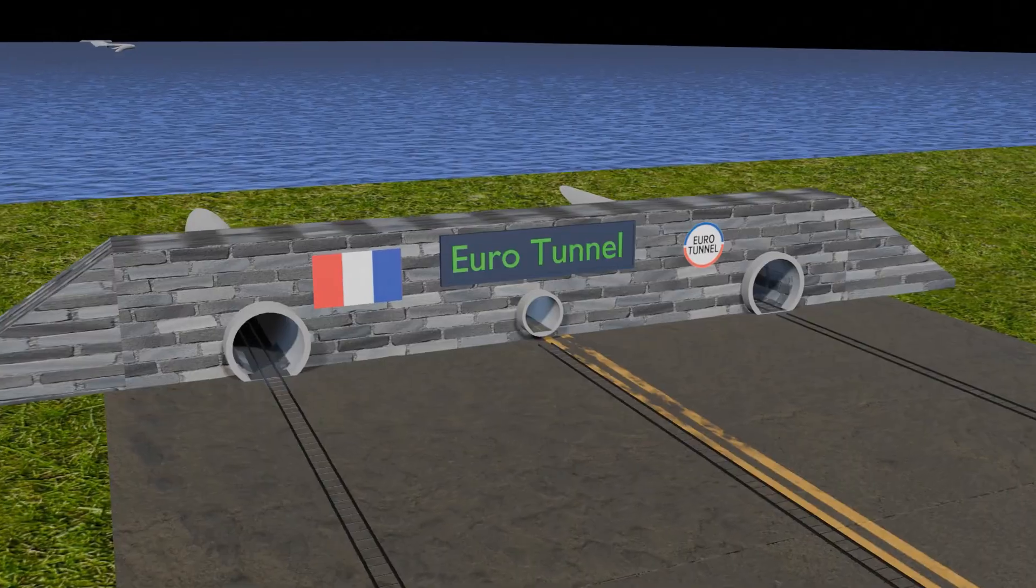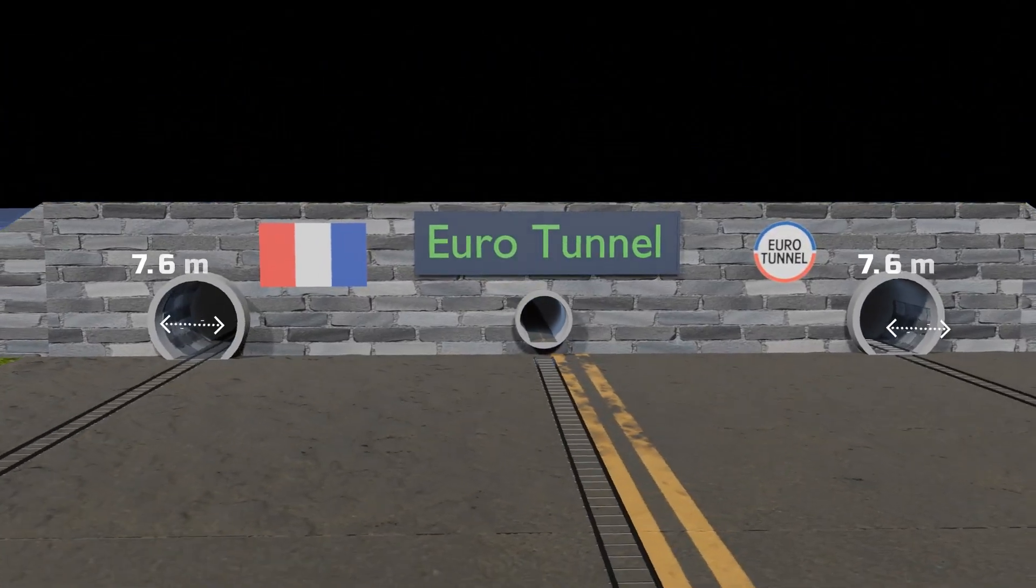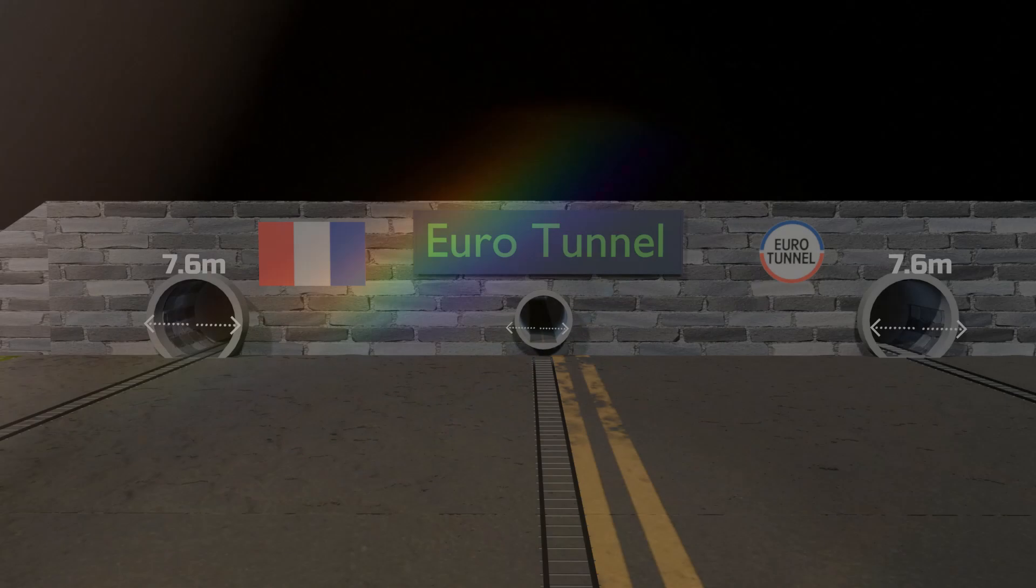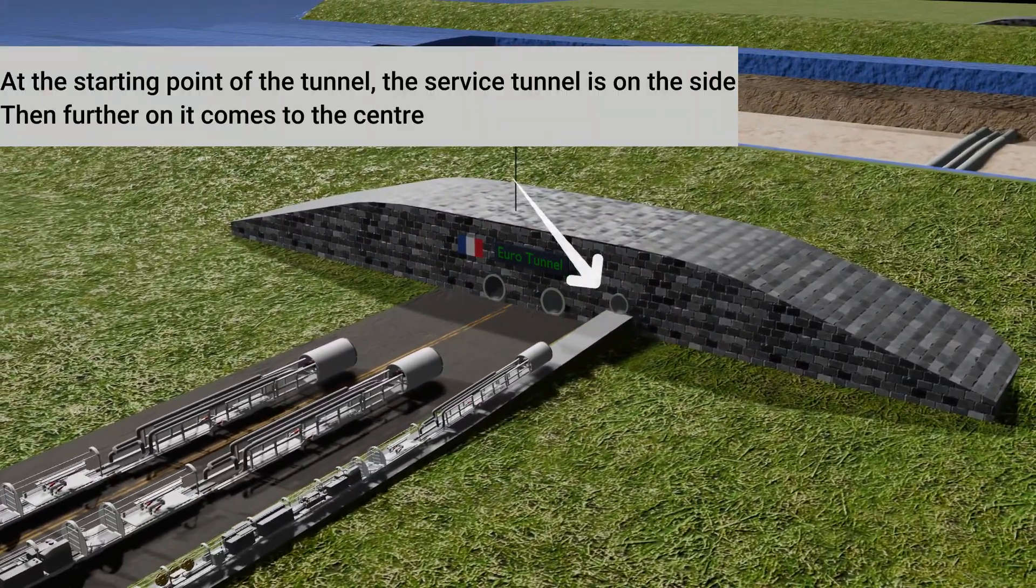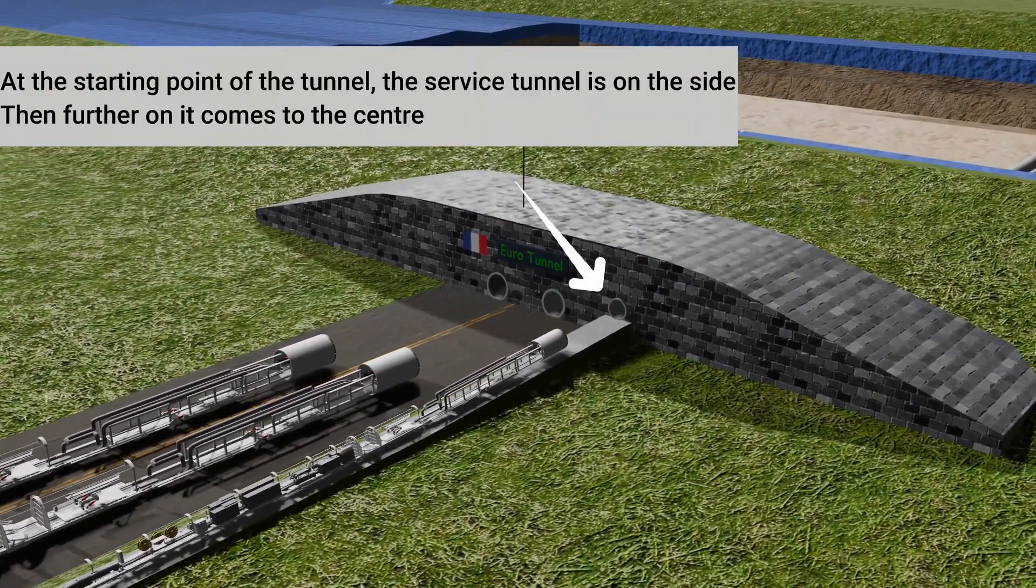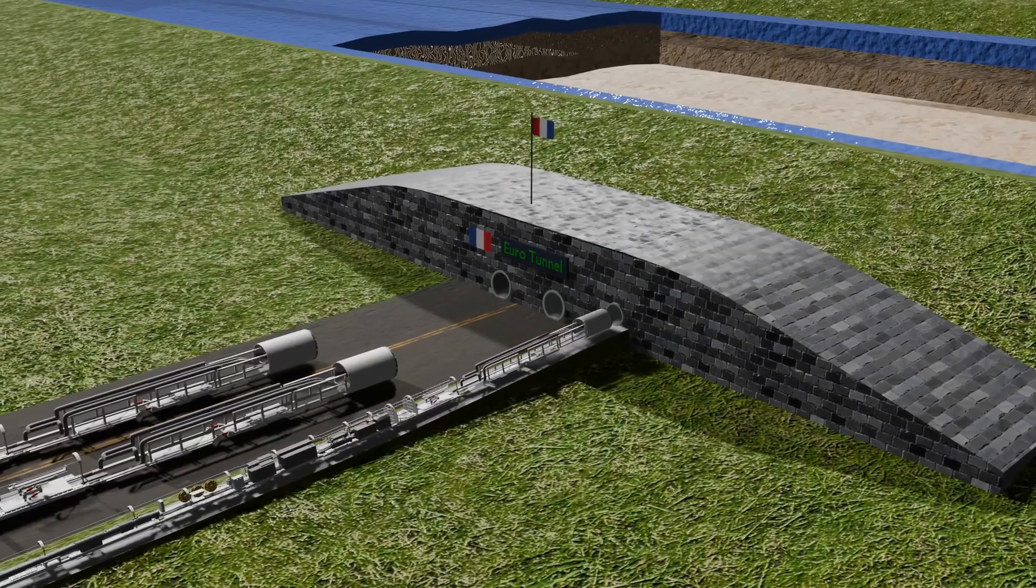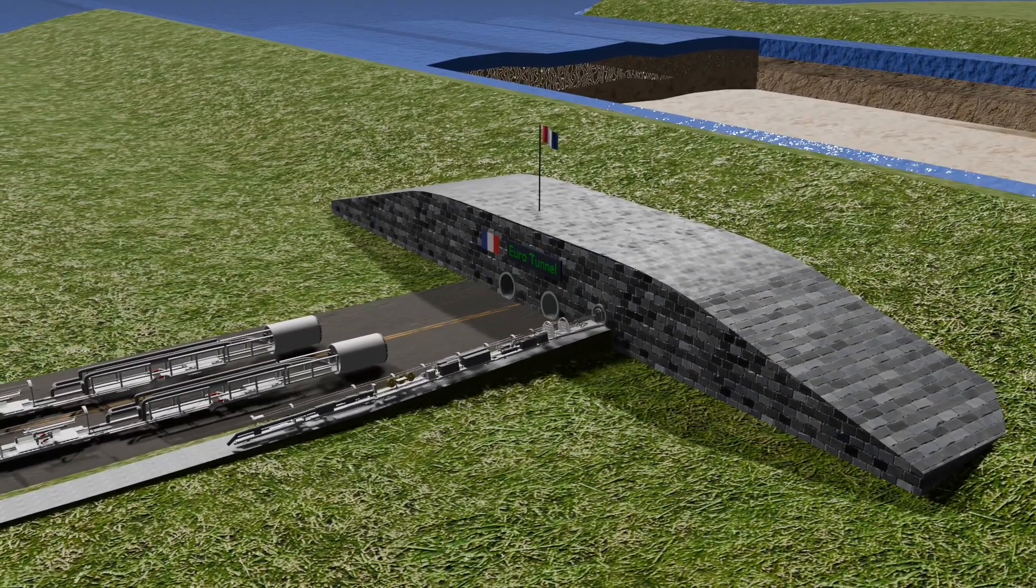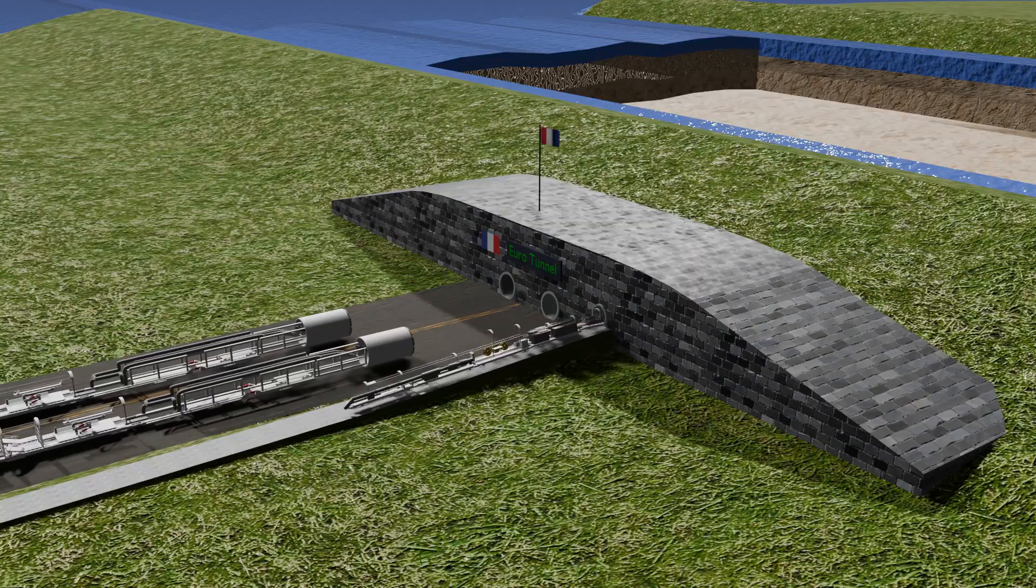The diameter of each railway tunnel was 7.6 meters, while the service tunnel in the center measured 4.8 meters in diameter. Construction began with the service tunnel, which was placed slightly ahead of the railway tunnels. This allowed geological investigations to be conducted for the two main railway tunnels alongside the service tunnel.